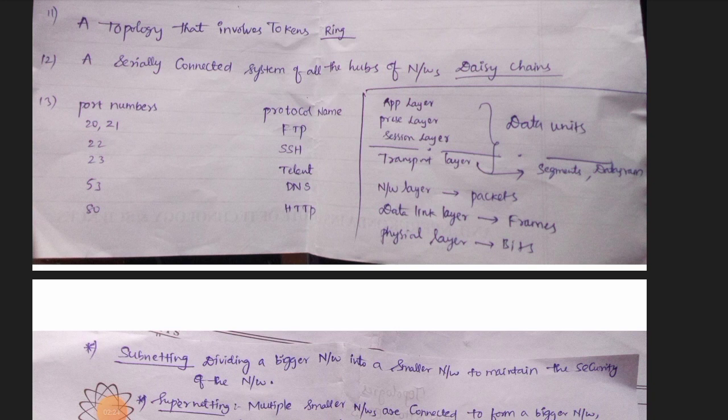In the transport layer, there are segments of data. Then the network layer has packets. Then the data link layer has frames. Then the physical layer has bits. Then the application layer and presentation layer have data units.